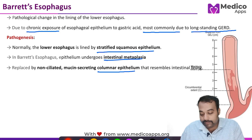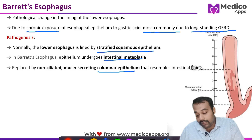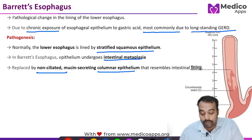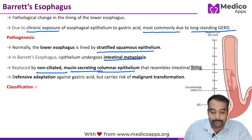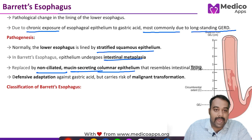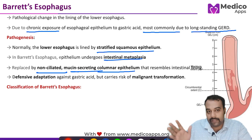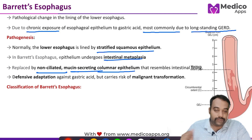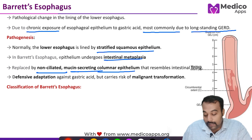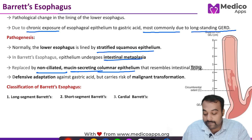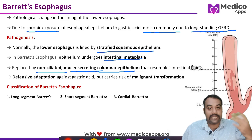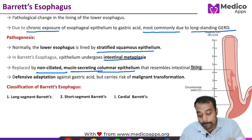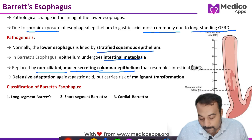The mucosa is replaced by non-ciliated mucin-secreting columnar epithelium — essentially a defensive adaptation by the lower esophageal mucosa. We can classify Barrett's esophagus into three types: long segment, short segment, and cardiac Barrett's.